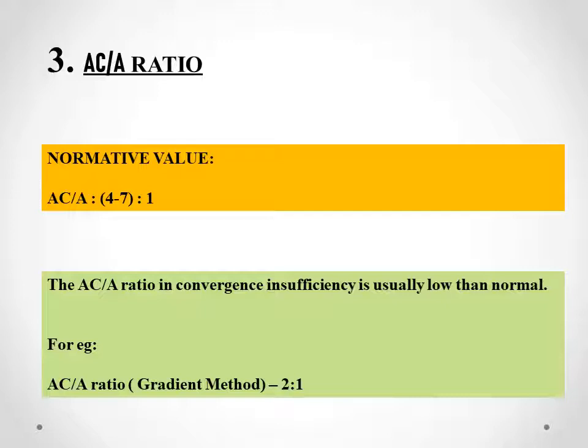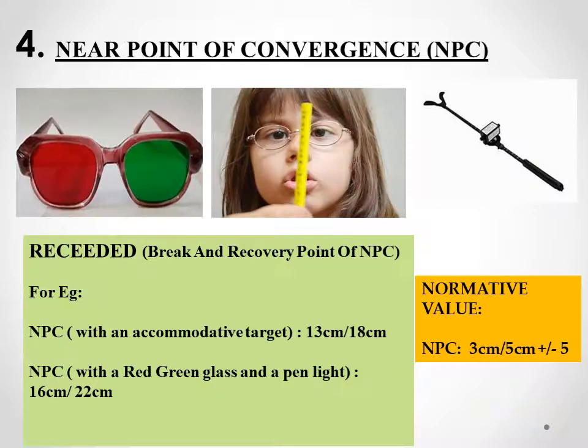Note that in divergence excess, we also get a low AC/A ratio. The fourth test is the near point of convergence (NPC) test, which can be performed using an accommodative target like a pen or pencil, or using red-green glass and a pen light, called PLRG. I would suggest performing both tests, because I have seen patients with convergence insufficiency showing normal values with the accommodative target, but receded values in both break and recovery when PLRG was performed. This happens because the red and green dissociates the patient's fusion, giving the exact NPC value.